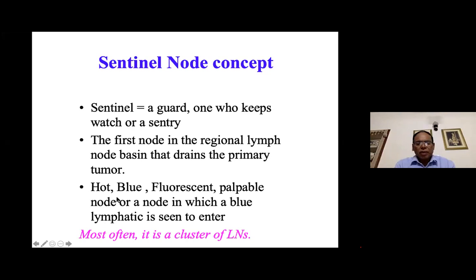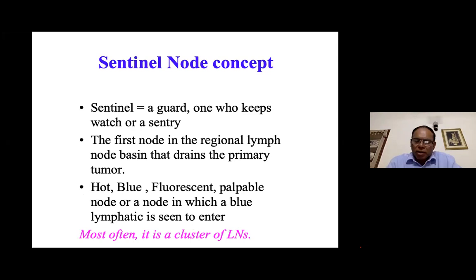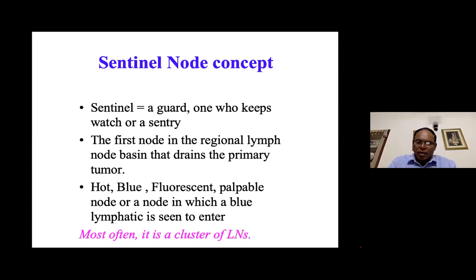A sentinel node is defined as: a hot node (hot on gamma isotope uptake), blue if you inject blue dye, fluorescent if you inject fluorescent dye, or a palpable node — or a node in which a blue lymphatic is seen to enter. Sometimes the amount of dye reaching the node is so little that it stains only the lymphatics and not the node itself. But if you see a colored lymphatic entering a node, you should still call it a sentinel node. Remember this definition for your viva.